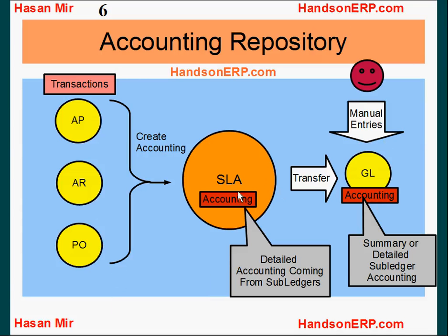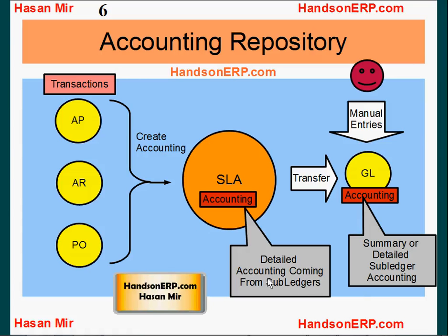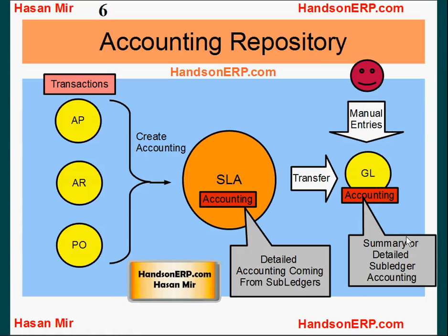Subledger accounting module contains detailed accounting information at the line level. You may or may not choose to bring those details over to the general ledger module. This won't impact your financial reports because reports like income statements, balance sheets, and cash flow statements display balances, not detailed line-level information. So you can choose to transfer summary information from subledger accounting module to the general ledger module. For example, if you have debited one account 50 times for $1 each, then only one line will go to GL as opposed to 50 lines, but that one line will have a $50 amount.